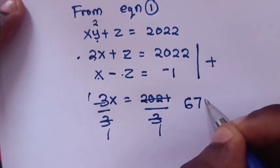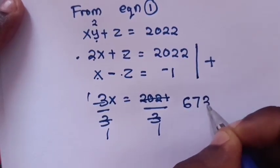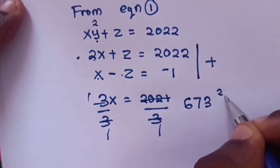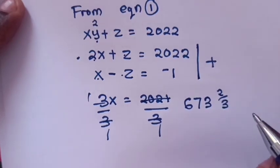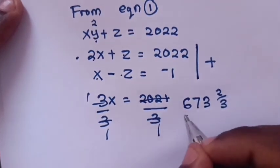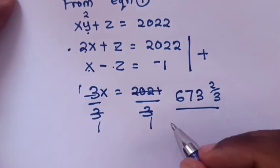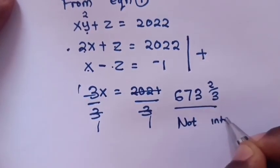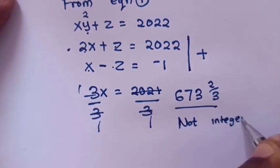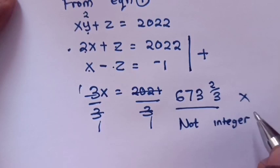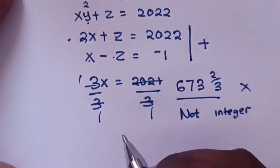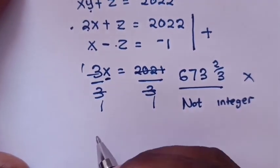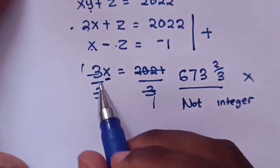Dividing both sides by 3: x = 2021/3, which is a fraction. Therefore x is not an integer, so this is not a valid solution as we are looking for integer solutions.